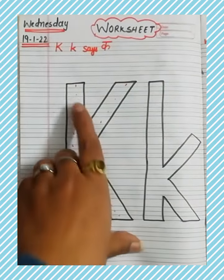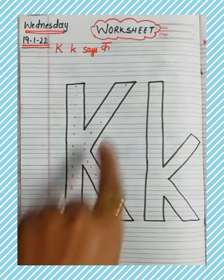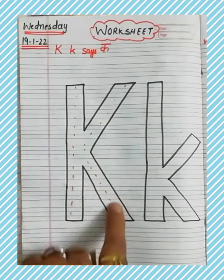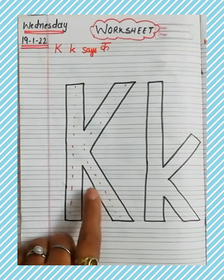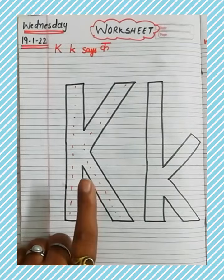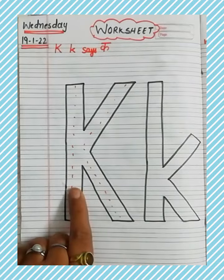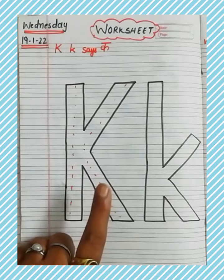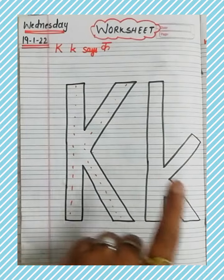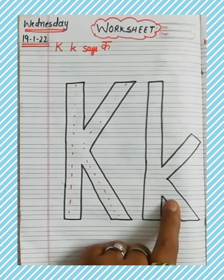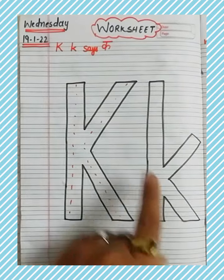Student, ये कौन सा K है baita? बताएंगे जल्दी से. Speak with me — Capital K. This is a capital K and this is a small K.